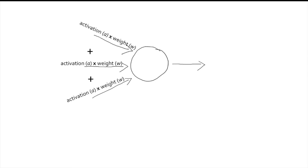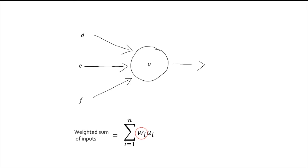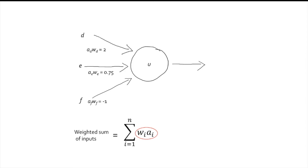This is all compactly expressed in this equation, where Wi is the given weight of the connection of the unit with the given input i. The weight for unit D was 2, the weight for unit E was 0.25, and the weight for F was minus 1. Ai is the activation value for a given input i, which in this case was 1 for each input. Wi times Ai is the weighted value of a given input i, and the summation indicates that we sum all of the individual weighted values, where n is the total number of inputs. Since we have 3 inputs, n equals 3.